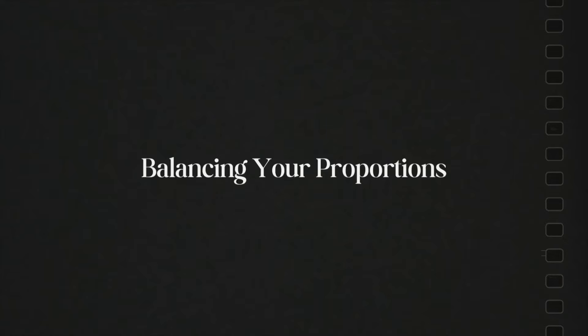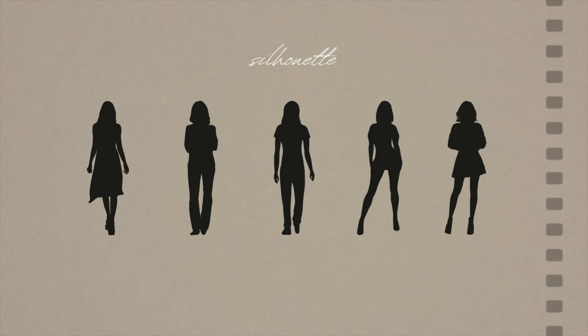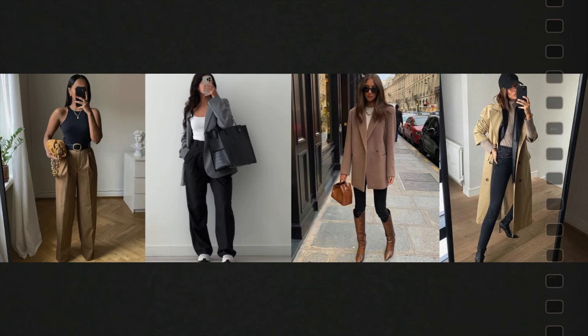First up we have balancing your proportions. People tend to simplify this by saying that you should wear a tight top with flowy bottoms, or tight bottoms with a flowy or baggy top, but there is so much more that goes into it. Before we really get into it, I want to establish the difference between proportions and silhouettes since we're going to be talking about both. The silhouette of an outfit is the outline or shape of how that clothing item sits on you — think of it as a shadow. Proportions, on the other hand, are how parts of an outfit look in relation to one another, for example a tight top with flowy bottoms. The relation between these items creates a certain proportion which then helps to make up the silhouette.